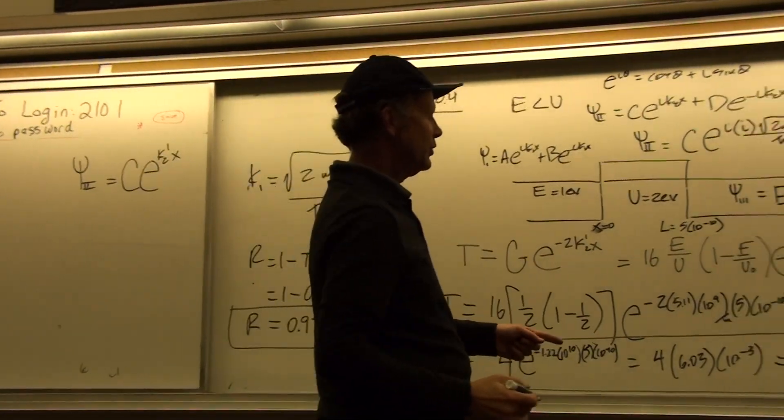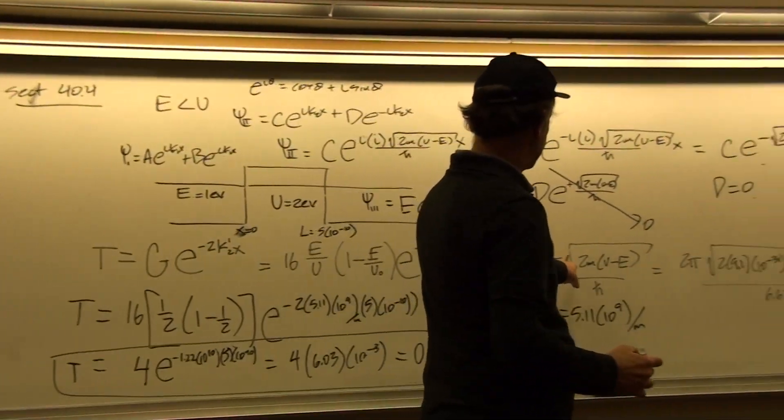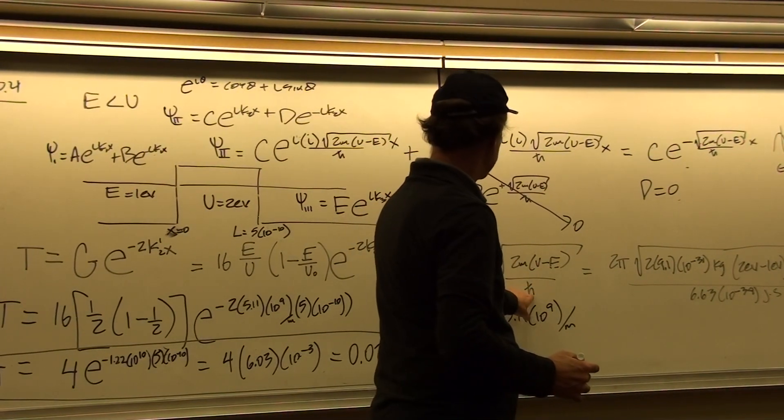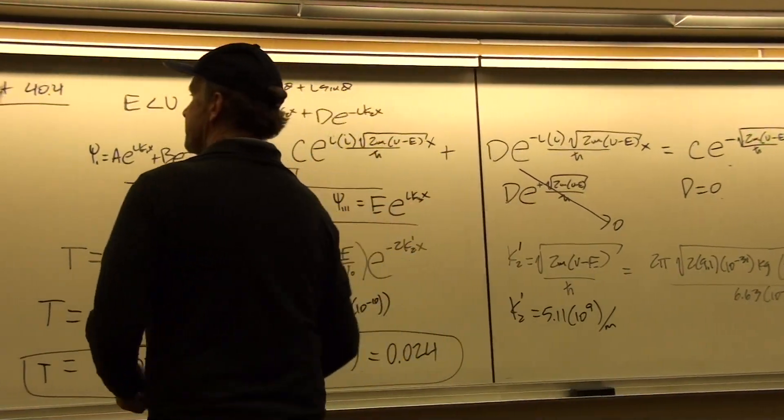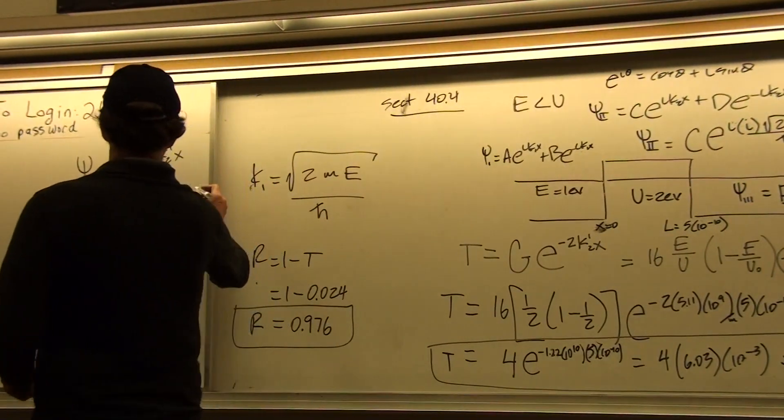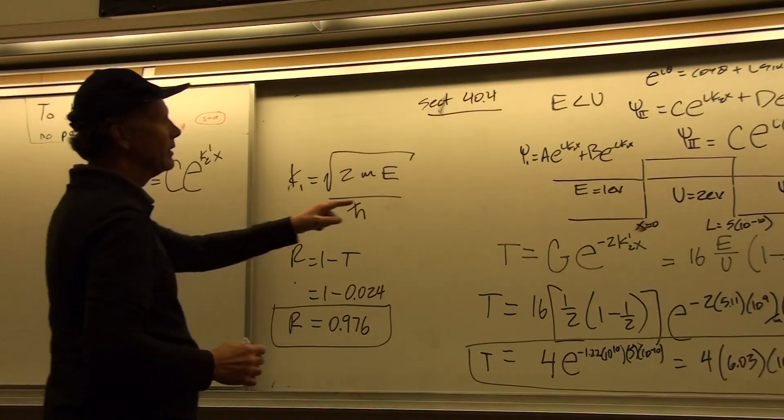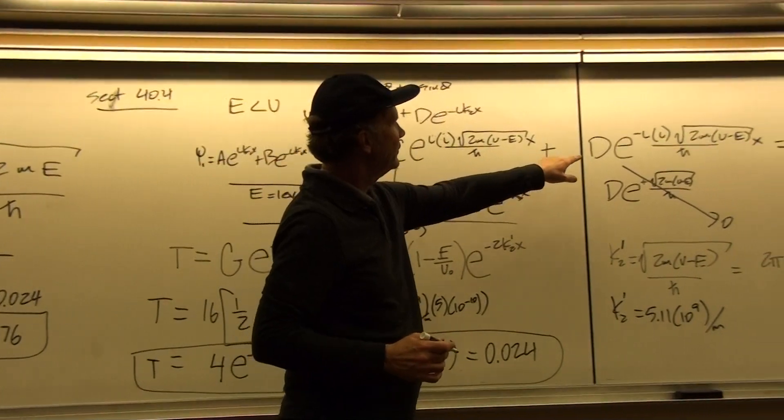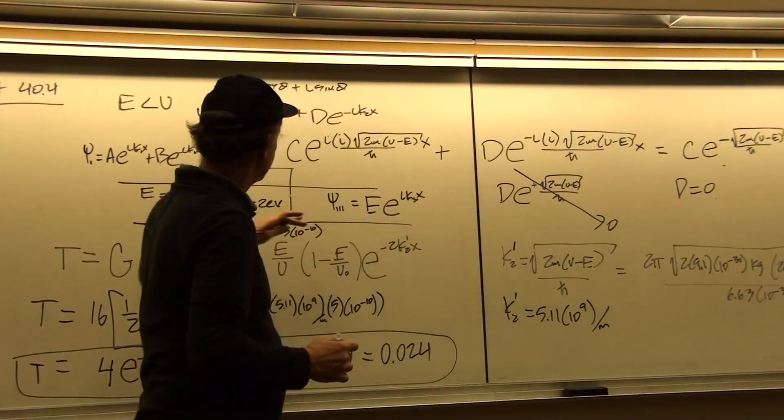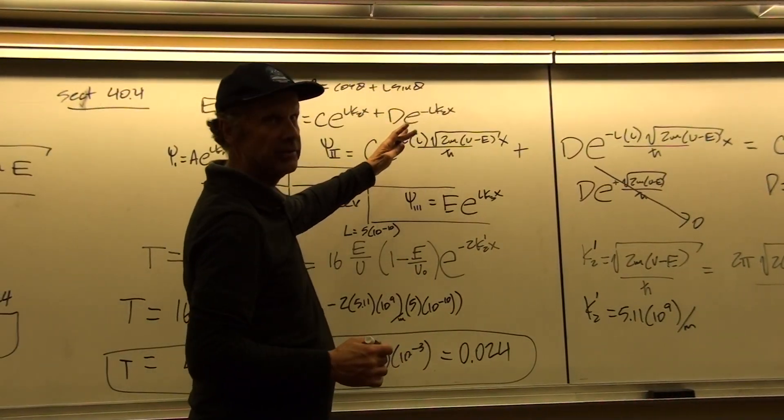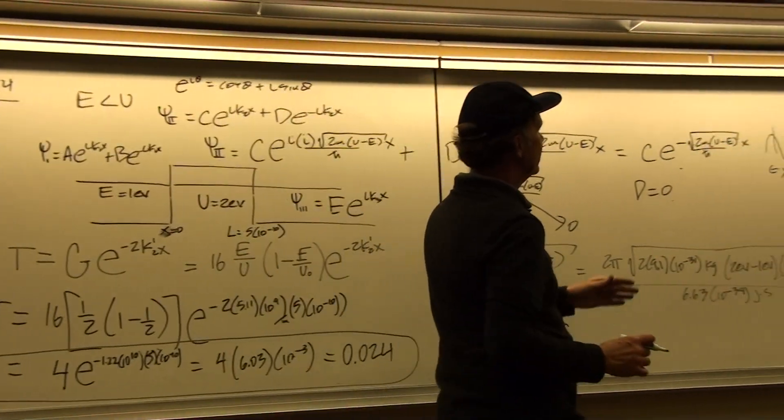where k2 prime is given by the square root of 2m times u minus e over h bar, we have this expression then for psi 2 where we set the d coefficient equal to 0 so that we don't have exponential increase in this region,